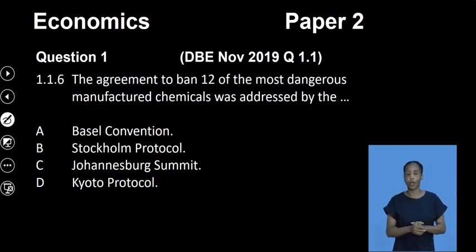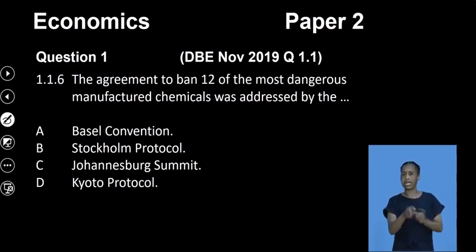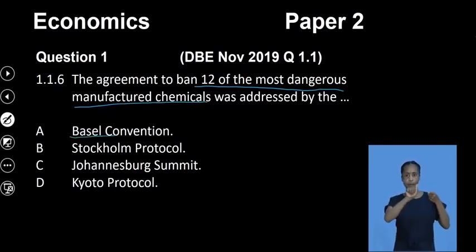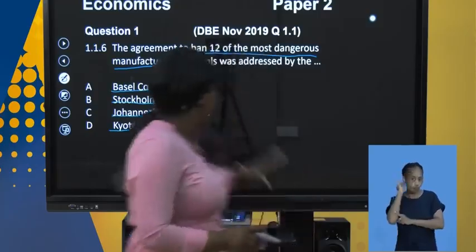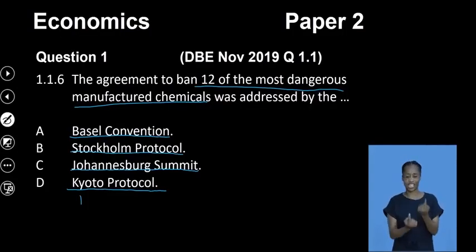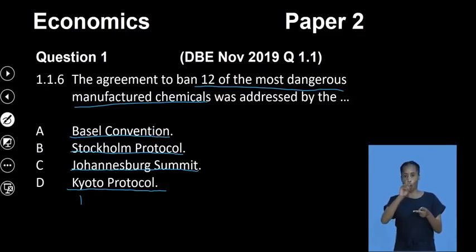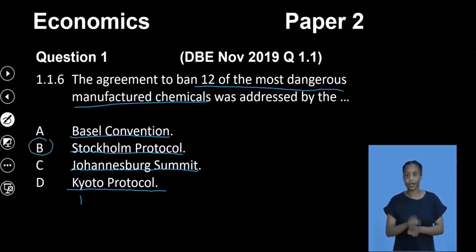Question 1.16: the agreement to ban 12 of the most dangerous manufactured chemicals was addressed by... A says the Basel Convention. B says the Stockholm Protocol. C says the Johannesburg Summit. D says the Kyoto Protocol. When looking at environmental sustainability, familiarize yourself with all the protocols and what was discussed in each one — the Basel Convention, the Stockholm Protocol, the Johannesburg Earth Summit, and the Kyoto Protocol. In this case, our answer is the Stockholm Protocol.